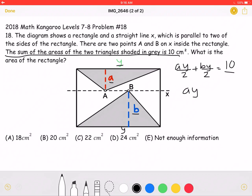But we can rewrite this as being one fraction, and then multiply by 2. And here we can see that we can factor out a Y. Y times A plus B would be equal to 20.